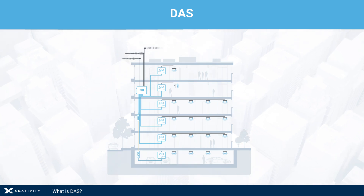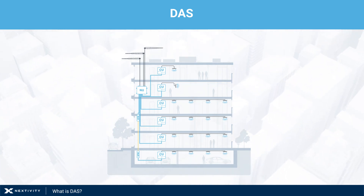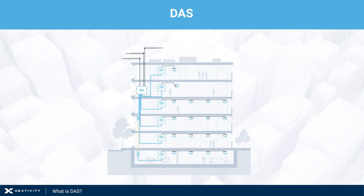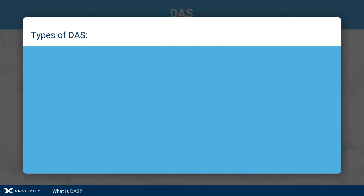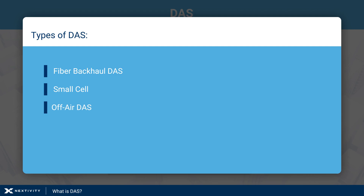There are different kinds of DAS, differentiated by the types of components that make up the system. Types of DAS we will discuss are fiber backhaul DAS, small cell, and off-air DAS.